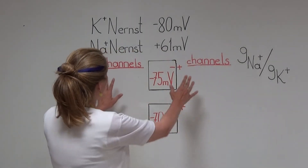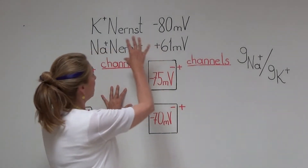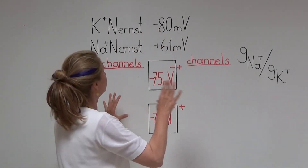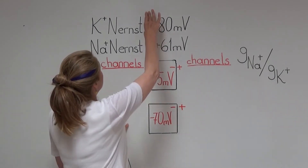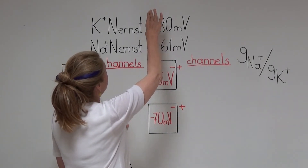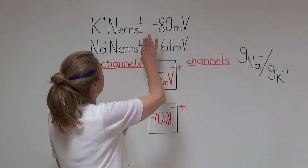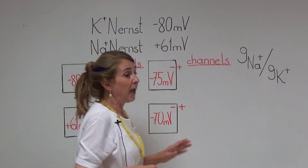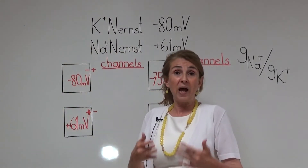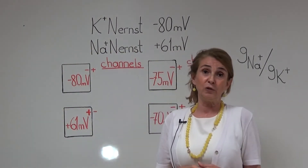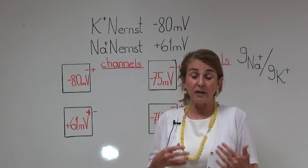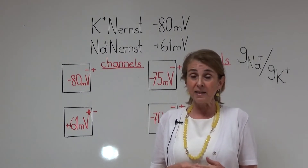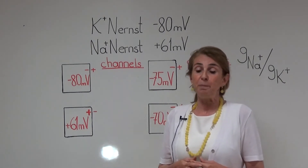Here we have four cells. Some conditions are the same in all of these cells. The Nernst potential of potassium is minus 80 mV, the Nernst potential of sodium is plus 61 mV, and we all know that sodium is higher in concentration outside the cells and potassium is higher in concentration inside the cells.